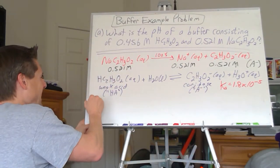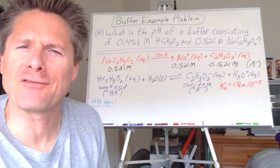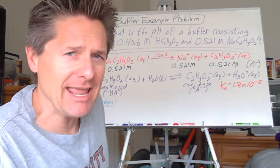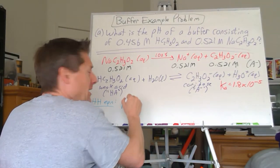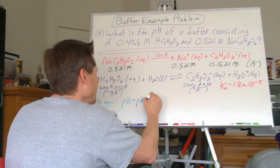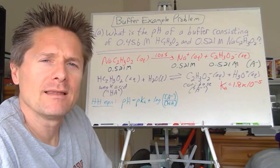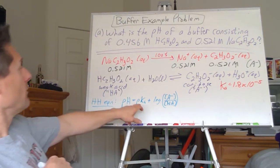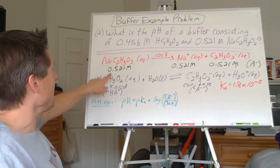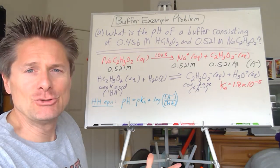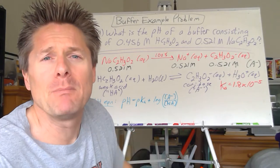The Henderson-Hasselbach equation: pH = pKa + log([A⁻]/[HA]). Do we know Ka? Check. Do we know the A⁻ concentration? Check. Do we know the HA concentration? Check. Do all your logs, track your uncertainty, and we get the pH of this buffer. When you recognize it's a buffer and use this equation — boom!